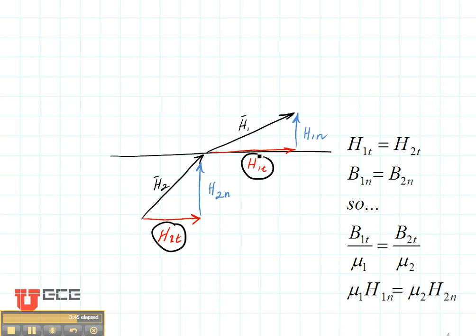The normal magnetic flux density is what is equal across this boundary. So B1N is equal to B2N. Then we use our equations and we can see that the first equation becomes the first equation and the second equation becomes the second equation.